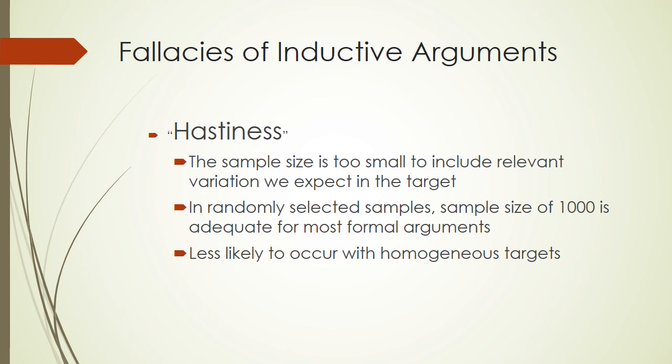As long as our sample is randomly selected, a sample size of 1,000 is generally adequate to represent a population of 1 million or more. For more on this concept, be sure to read the appropriate portion of your textbook. For target populations that are under 1 million, you can generally get away with having a sample size that is the square root of the size of your target population.